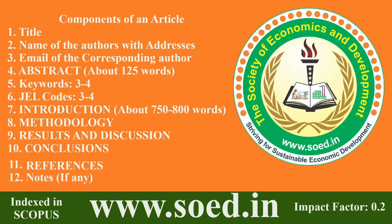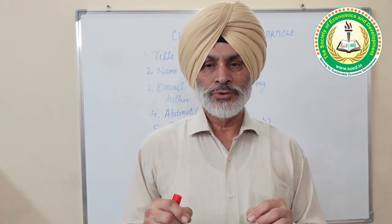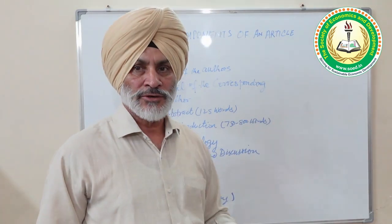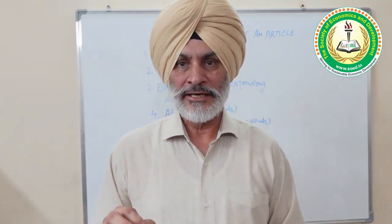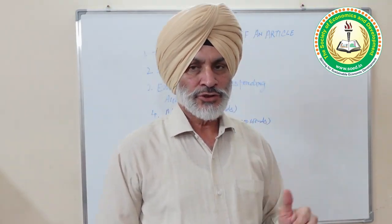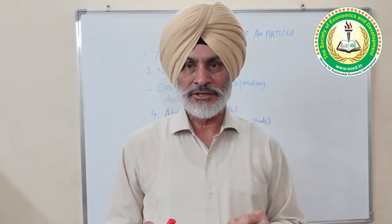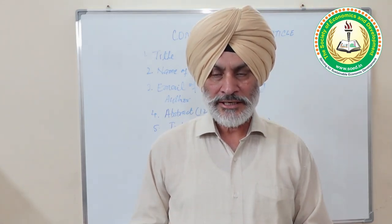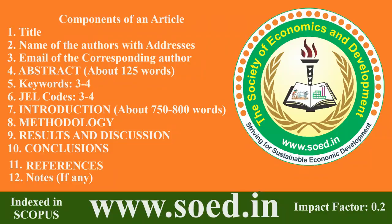The abstract should be about 125 words and should include the main findings along with policy implications. Do not cite any reference in the abstract — it should be based on your own findings. If you cite a reference, the article may be rejected on submission. The abstract and conclusion should be based on your findings, not on the findings of other scientists. It should not exceed 125 words.